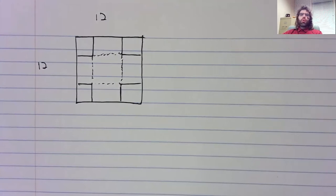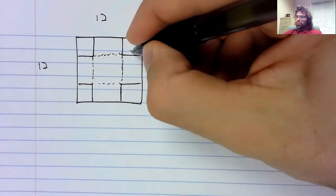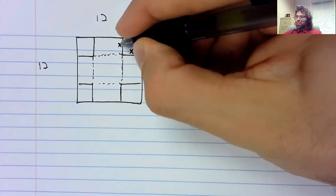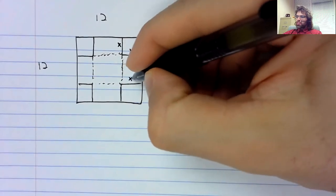So let's label some stuff. What can we control here? We can control the size of these squares that we cut out.